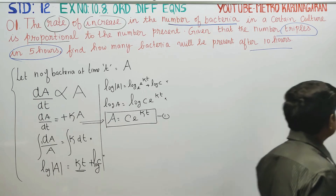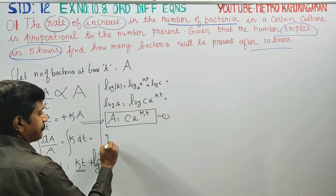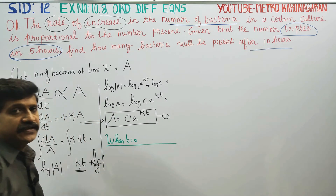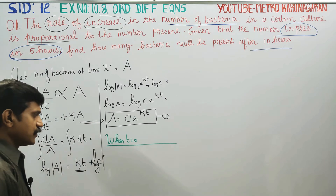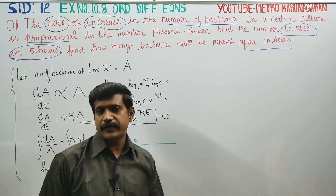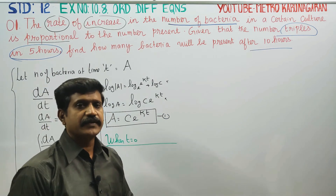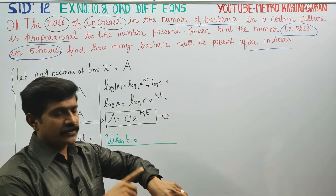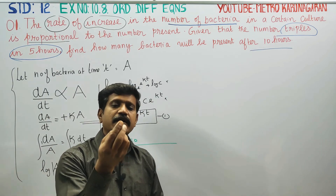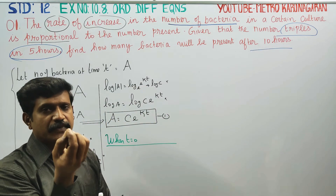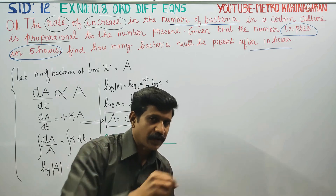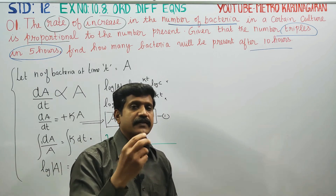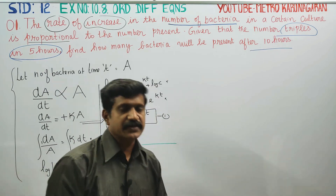The condition given is: when t is equal to 0, this is the initial condition. t is equal to 0 means I will start my experiment. For example, I will start a bacteria culture. When t is equal to 0, I will start the initial condition — that is the initial condition.